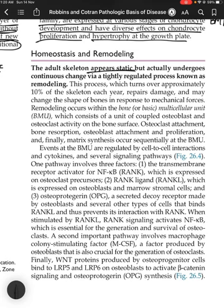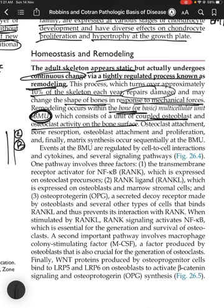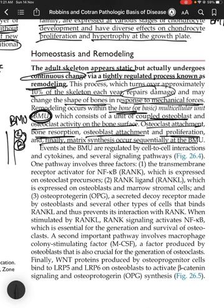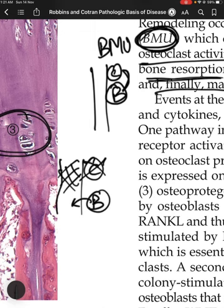The adult skeleton undergoes continuous remodeling, turning over approximately 10% of skeleton each year. Remodeling occurs within the basic multicellular unit (BMU), which consists of coupled osteoclast and osteoblast activity on the bone surface. Sequentially: osteoclast attachment and bone resorption, followed by osteoblast attachment, proliferation, and finally matrix synthesis.